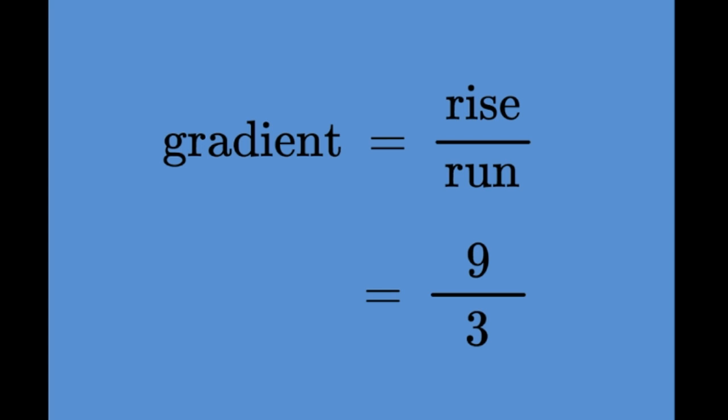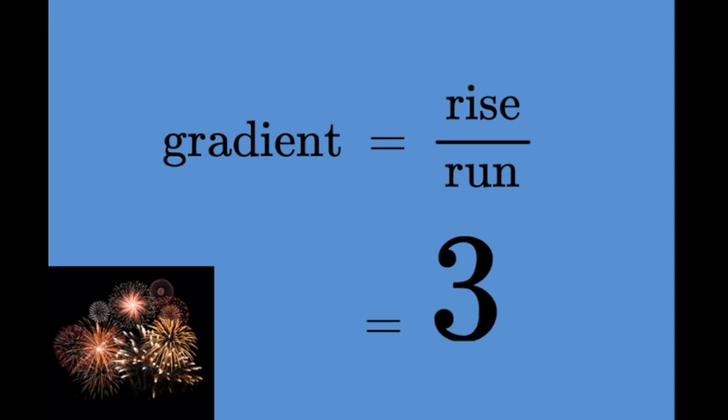Remember, gradient is equal to rise divided by run. In other words, 9 divided by 3. 9 divided by 3 comes to exactly 3. So that's the gradient of this line.